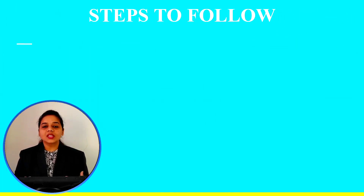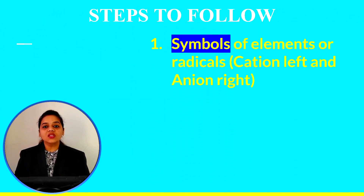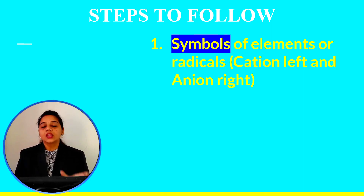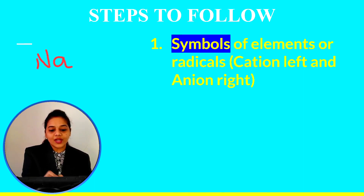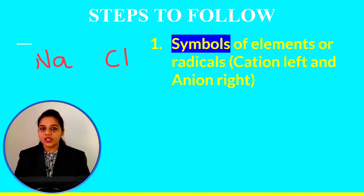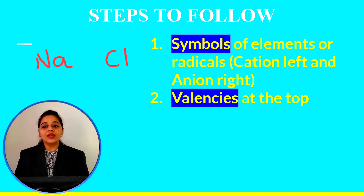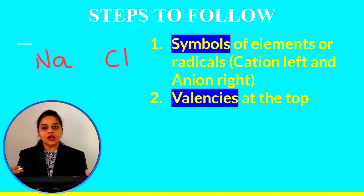Now let's move on to the steps to follow while writing a chemical formula. The first step is to write the symbols of elements or radicals side by side. On the left-hand side you will write the positively charged ion, and on the right-hand side you will write the negatively charged ion. For example, for sodium chloride, sodium will be on the left-hand side and chloride on the right-hand side.